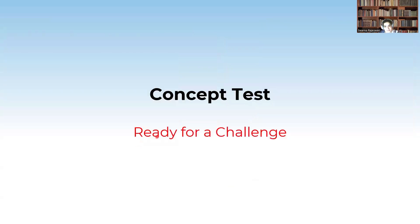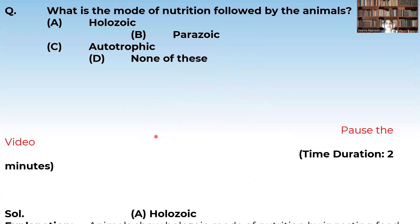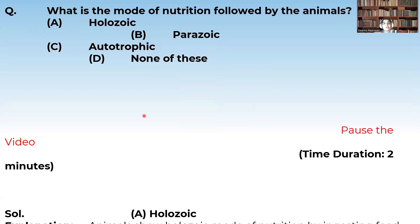Now let us take a small concept test. Which of the following modes of nutrition is followed by animals? The options are: holozoic, saprozoic, autotrophic, or none of these. Animals show holozoic nutrition — they take in food material through the mouth by ingestion. So the correct option is holozoic.